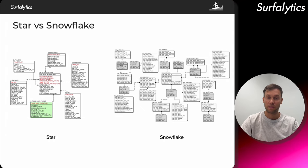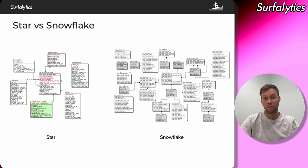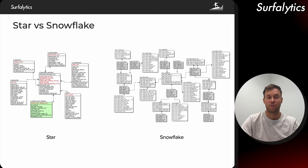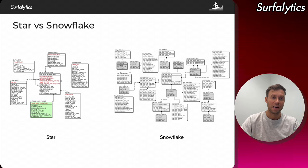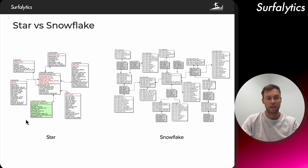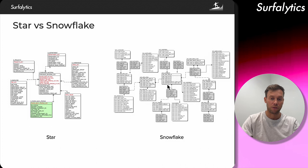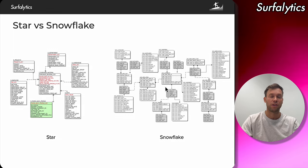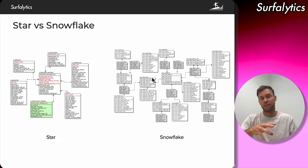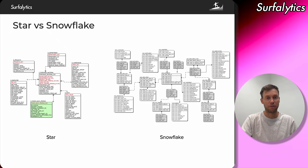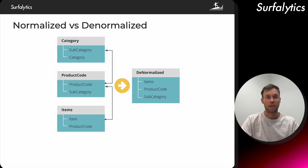Let's compare star and snowflake — one of the most popular interview questions. When we talk about analytics use cases for analytics engineers using tools like DBT, Snowflake, or BI tools, you really focus on the star schema, where you have simple fact tables with one level of joins to dimension tables. The third normal form is different — you have your fact tables, dimension tables, bridge tables, with more levels of joins. The snowflake schema is really applicable for the third normal form.